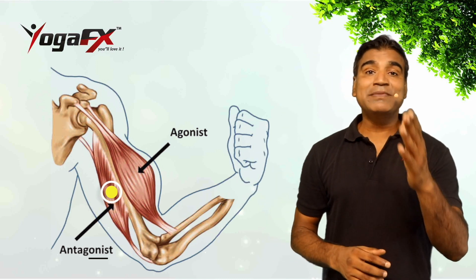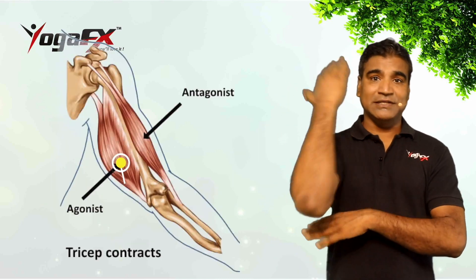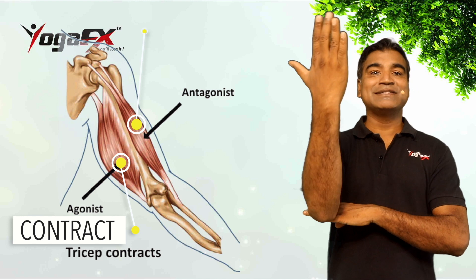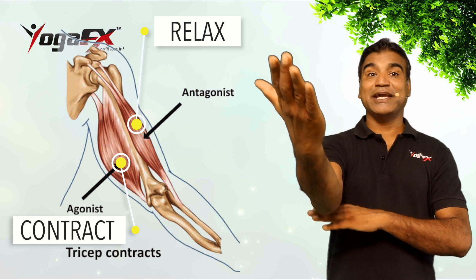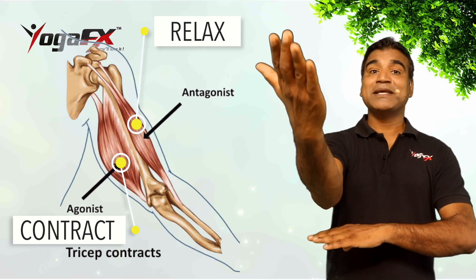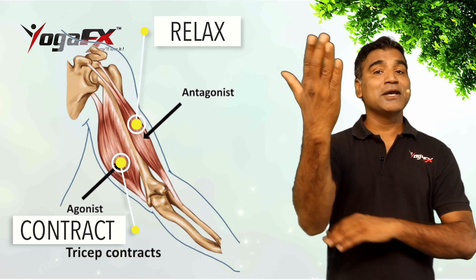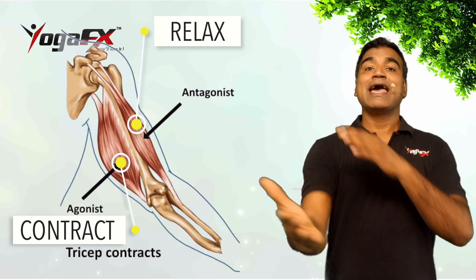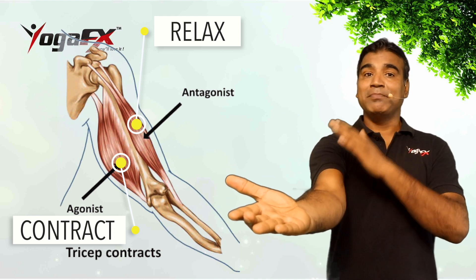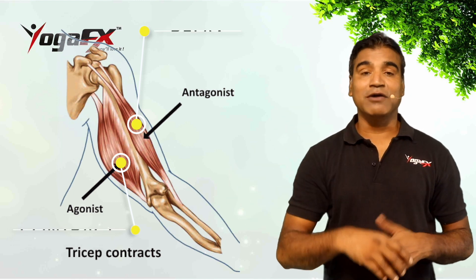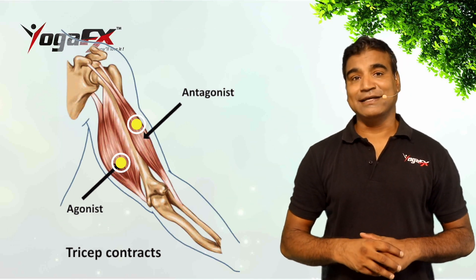When the movement is reversed — that is, when the elbow is extended against resistance — the tricep brachii becomes the prime mover and the bicep brachii assumes the role of antagonist.